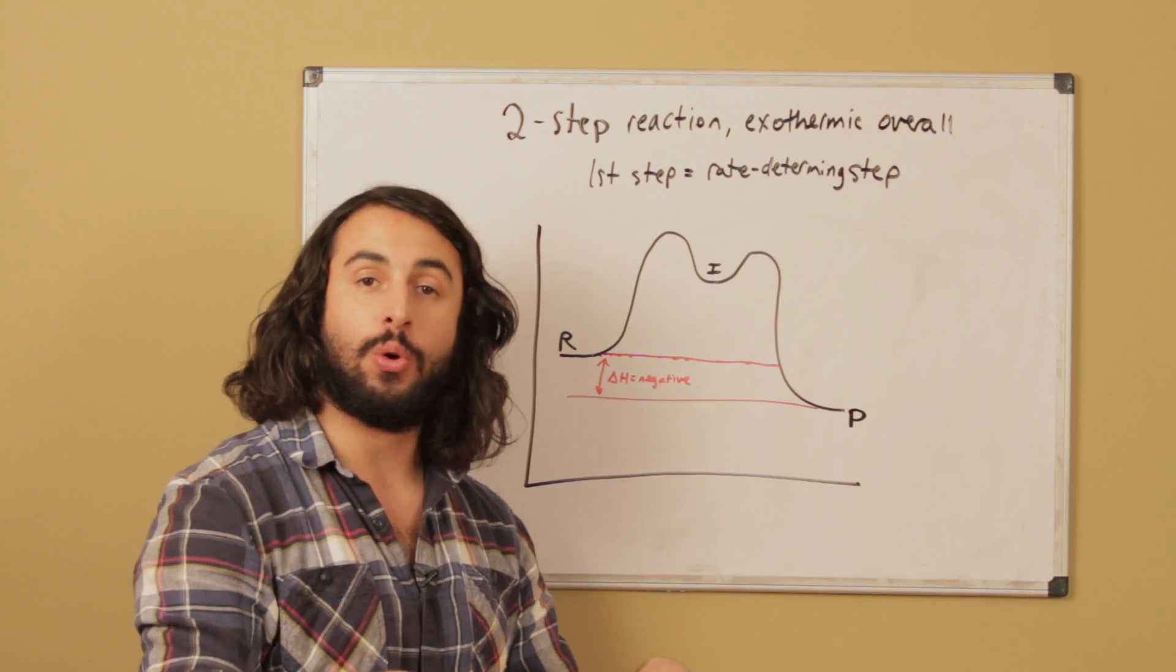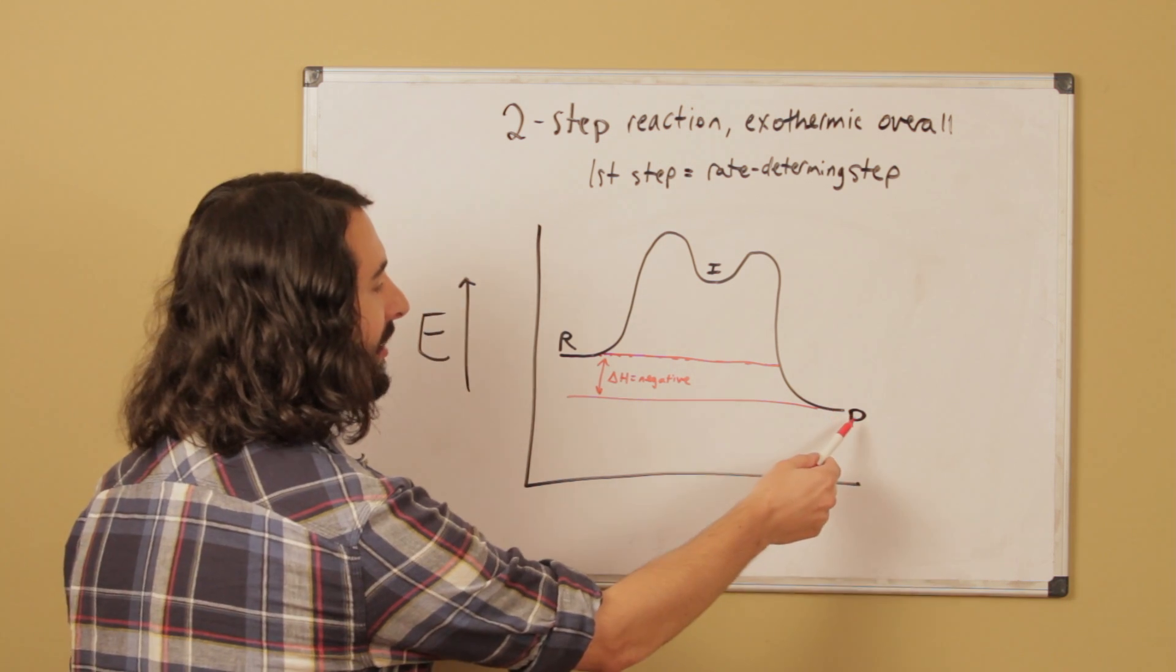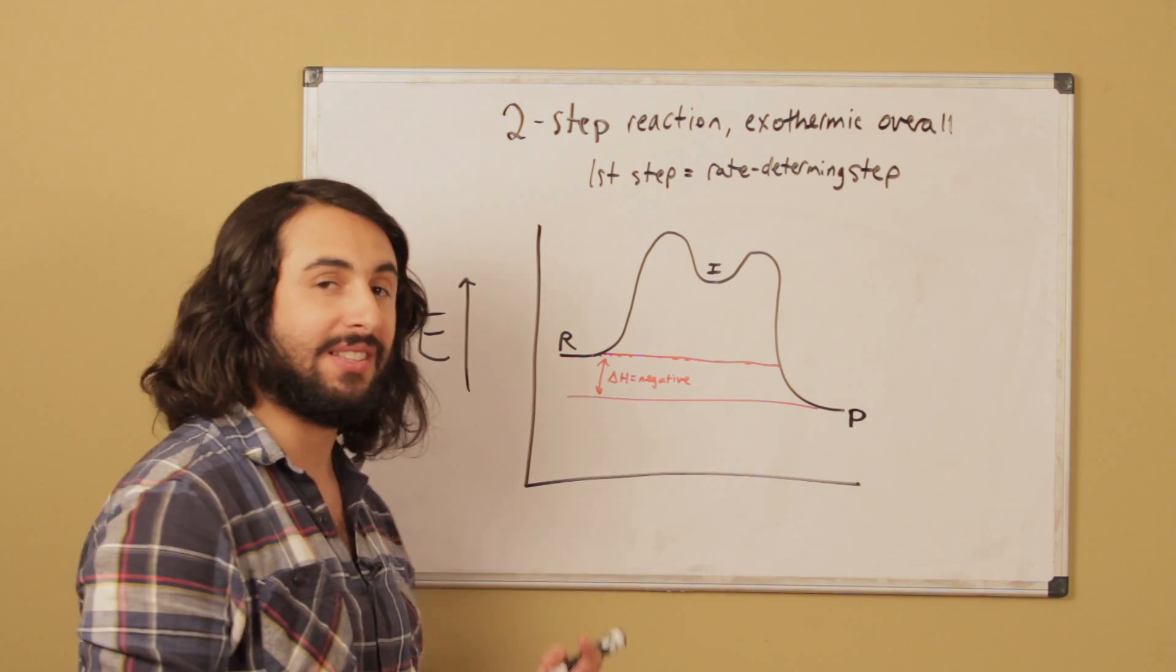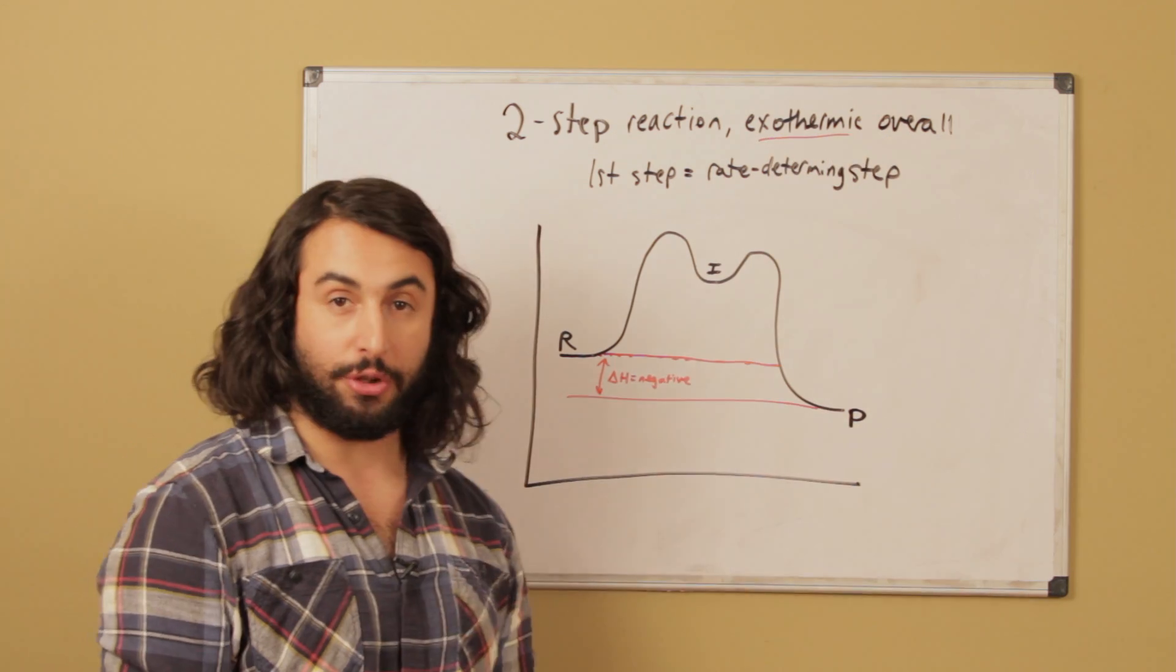The first thing that must be true about your energy diagram is that the products must sit lower than the reactants. That is how we make sure it is exothermic overall.